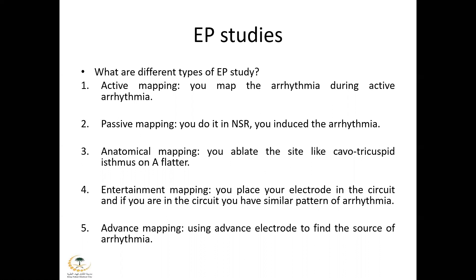There is something called entrainment mapping. In this, you place your electrodes in the circuit and try to mimic the pattern of the arrhythmia to confirm you're on the circuit. Advanced mapping is when you use different electrodes in all four chambers — the left atrium, left ventricle, right atrium, and right ventricle — to try to find the source of arrhythmias.